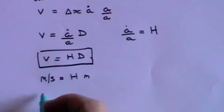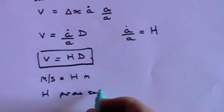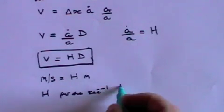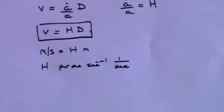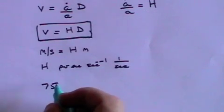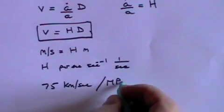And that means that H must be measured in per second, or second to the minus one, or one over second, depending on how you want to put it. But in fact, Hubble's constant is these days expressed in a rather peculiar way.